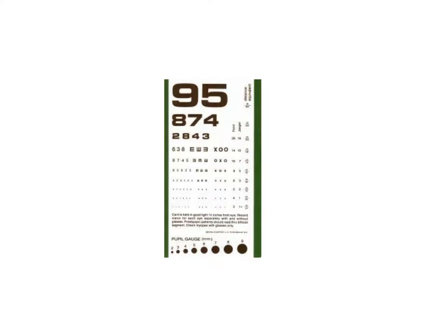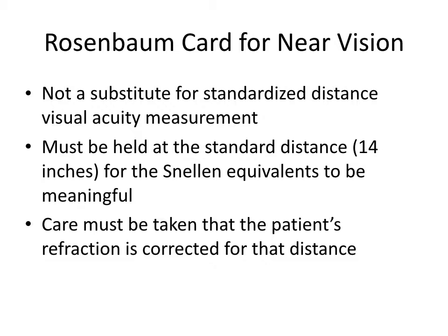To finish off this discussion on visual acuity is the Rosenbaum card that most of us use. It's not a substitute for standardized distance visual acuity measurement because it is not well controlled — the lighting is not well controlled, and its distance of use is not well controlled. It should be held at the distance marked on the card, in this case 14 inches. If it's held at seven inches, for example, which I've seen many patients do, a 20/40 letter size is really 20/80 for the patient.